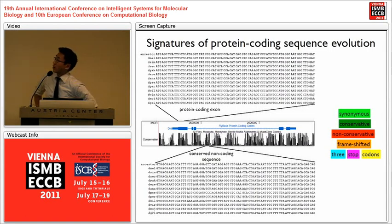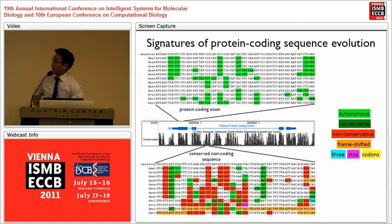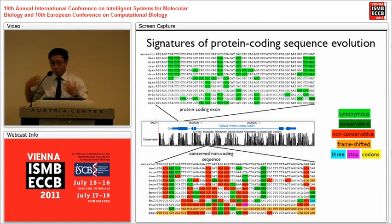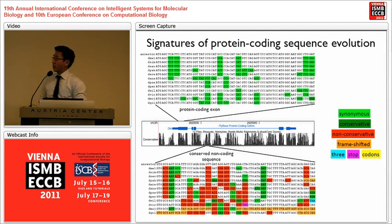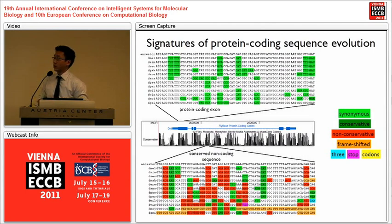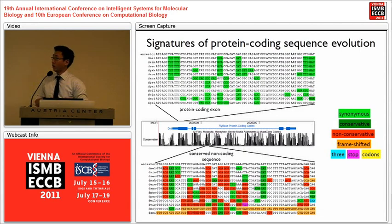I'm going to paint up the two alignments and color all the substitutions according to that key. When we do that, we see that the evolutionary signatures of conserved protein-coding regions and even highly conserved non-coding regions are very distinct. The systematic methods we'll talk about today look not just at conservation, but at what you could call evolutionary signatures — what sorts of substitutions have actually been tolerated.